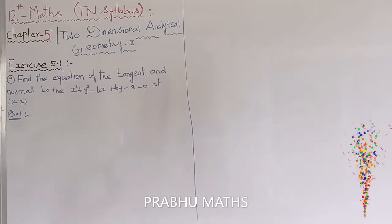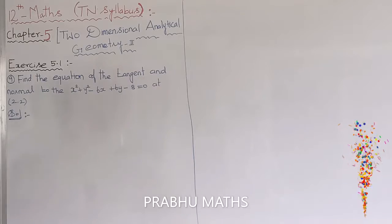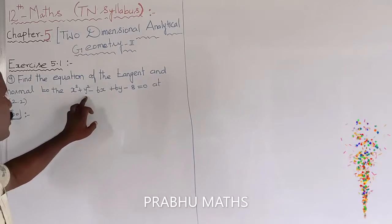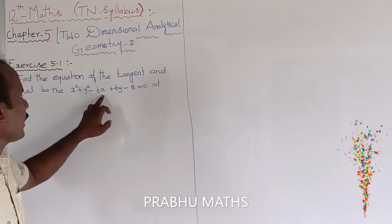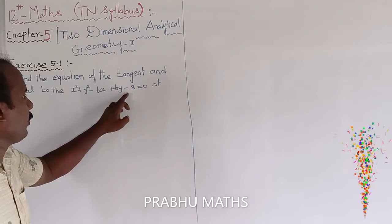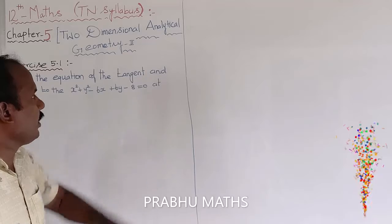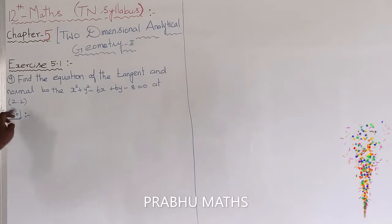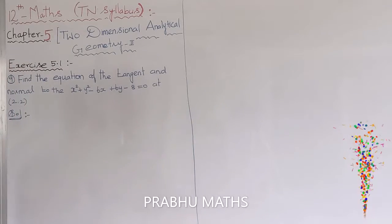Find the equation of tangent and normal to the circle x² + y² - 6x + 6y - 8 = 0 at the point (2, 2).